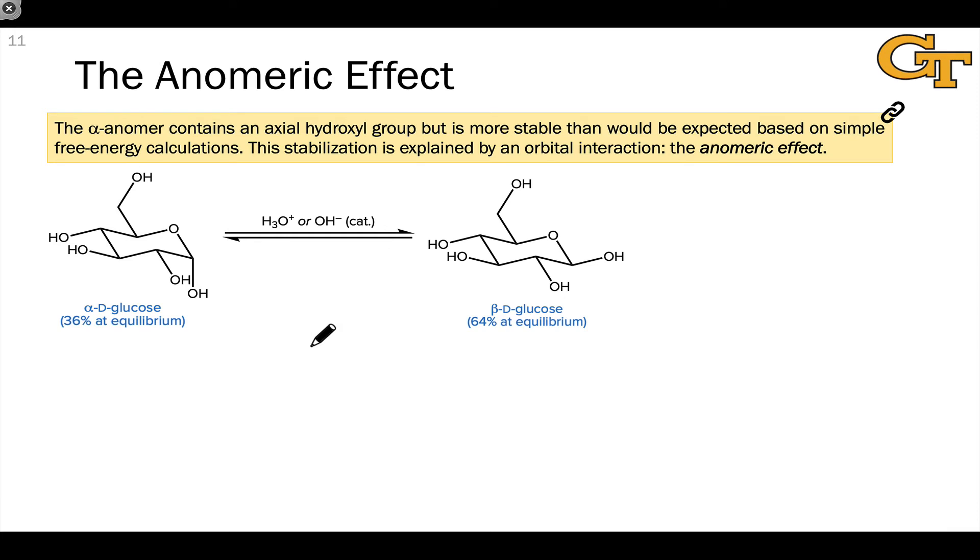Typically the A value, which represents the stability difference between axial and equatorial cyclohexane chairs, is about one kilocalorie per mole or larger. That would suggest a ratio of equatorial to axial that's much larger than the 64 to 36 we actually see.